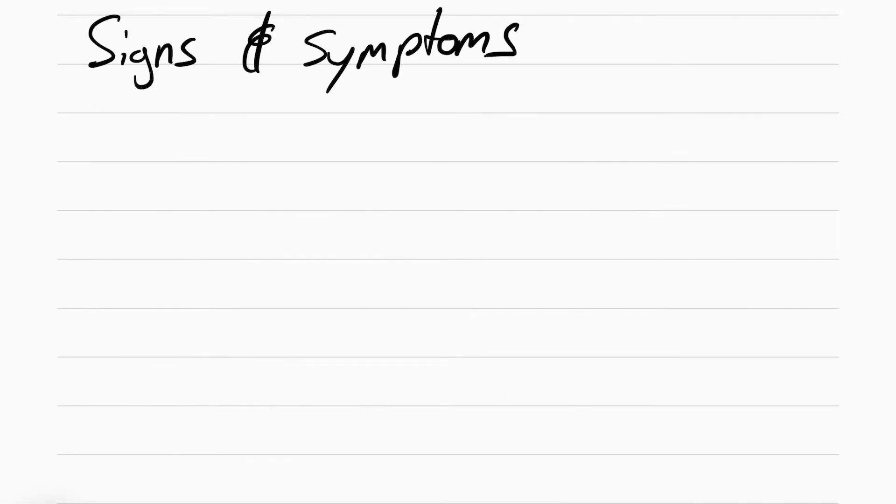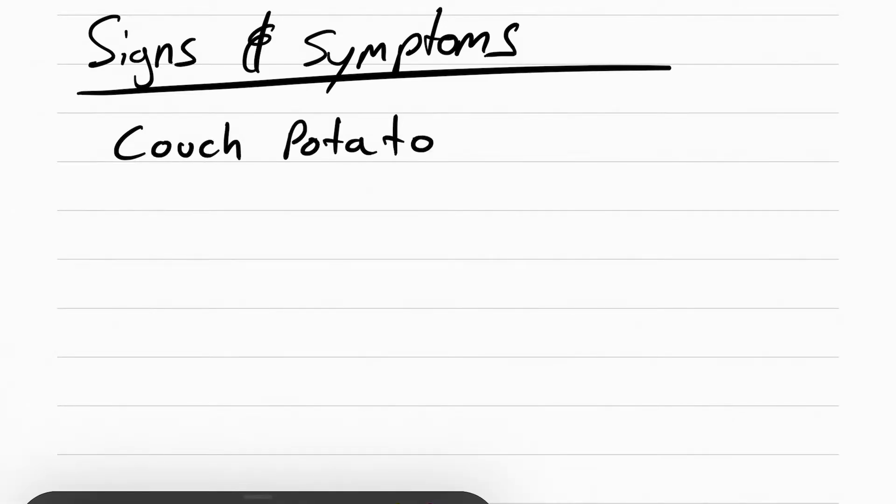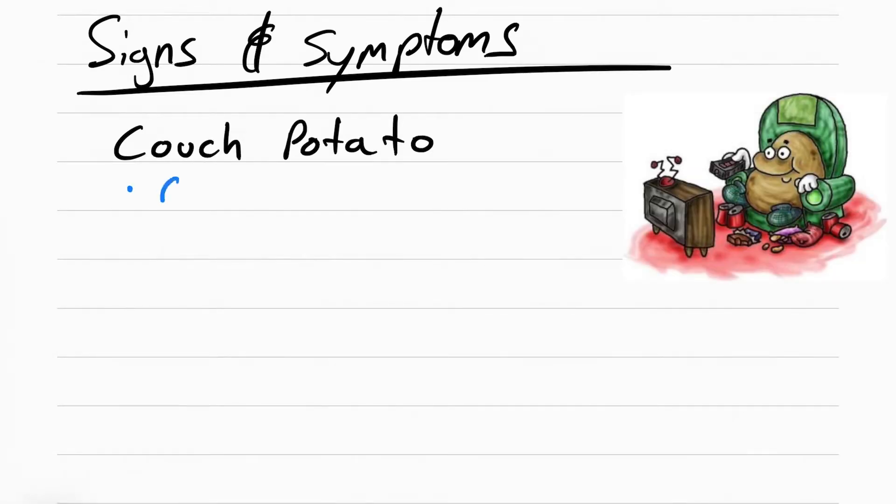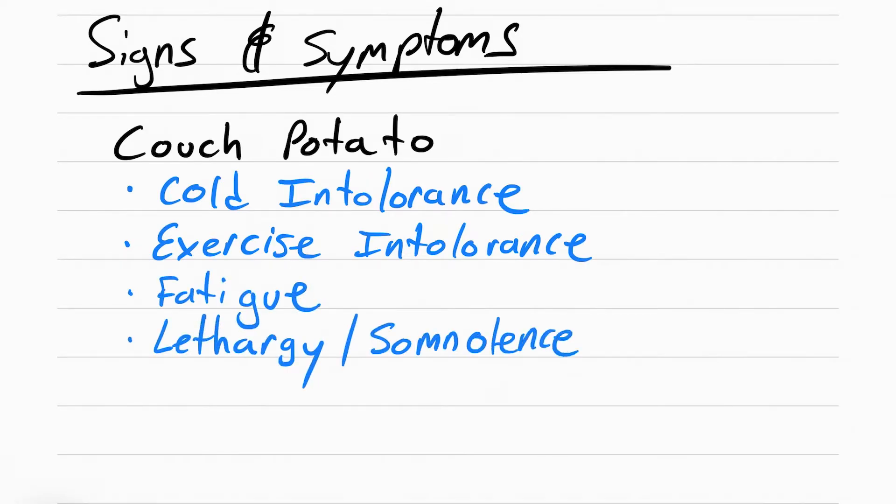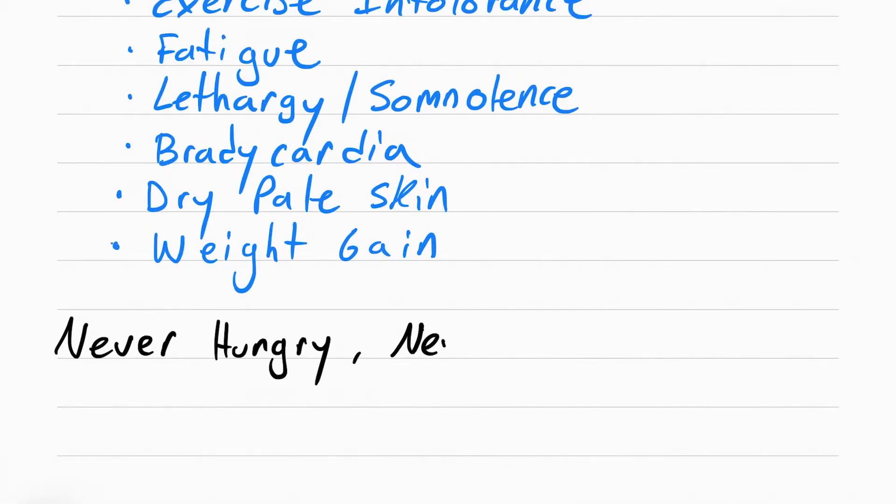So the signs and symptoms are going to be very similar to that. You want to think of a patient with hypothyroidism as a couch potato. So they're always cold, they don't like being in the cold, they can never exercise because they're always short of breath, they're always tired, they're always sleepy—which another way of saying sleepy is lethargic and somnolent. Their heart rate is really slow.